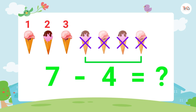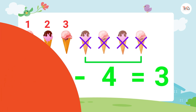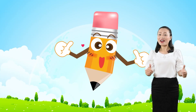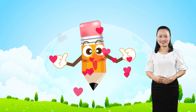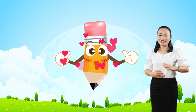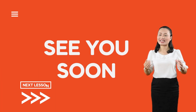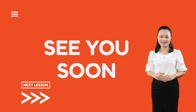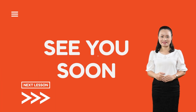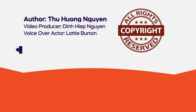So seven minus four equals three. Great, you've finished! Bye for now and see you soon in the next lesson.